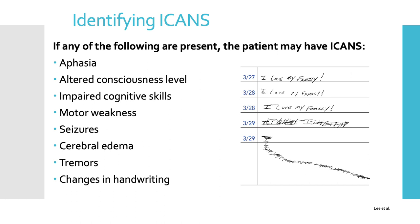Now we'll discuss how to identify ICANS. Because this is a neurotoxicity, the following neurological symptoms may indicate ICANS: aphasia, altered consciousness level, impaired cognitive skills, motor weakness, seizures, cerebral edema, tremors, and changes in handwriting. An example of handwriting changes a patient may exhibit with ICANS is shown on the right.